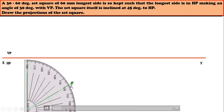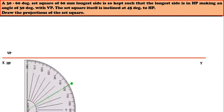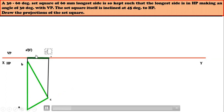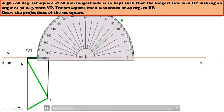It is a 30-60 degree set square — one angle is 30 degrees and the other is 60 degrees. You have constructed the set square; name the vertices as A, B, and C. The front view will appear as a straight line: A will be visible, C will be visible, and B will be hidden, shown as A-dash, B-dash in brackets, and C-dash.